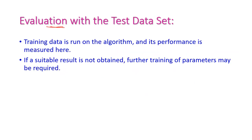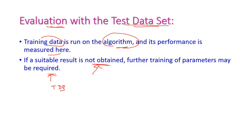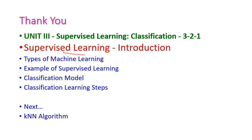The last step is evaluation with the test data set. The training data is run on the algorithm and the algorithm's learning performance is measured. If a suitable result is not obtained, then training is required again with a different training data set, and training continues until we reach the required output. So far we have seen the introduction about supervised learning — types of machine learning, examples of supervised learning, classification model, and classification learning steps. In the next class, we will see the K-nearest neighbor algorithm. Thank you.